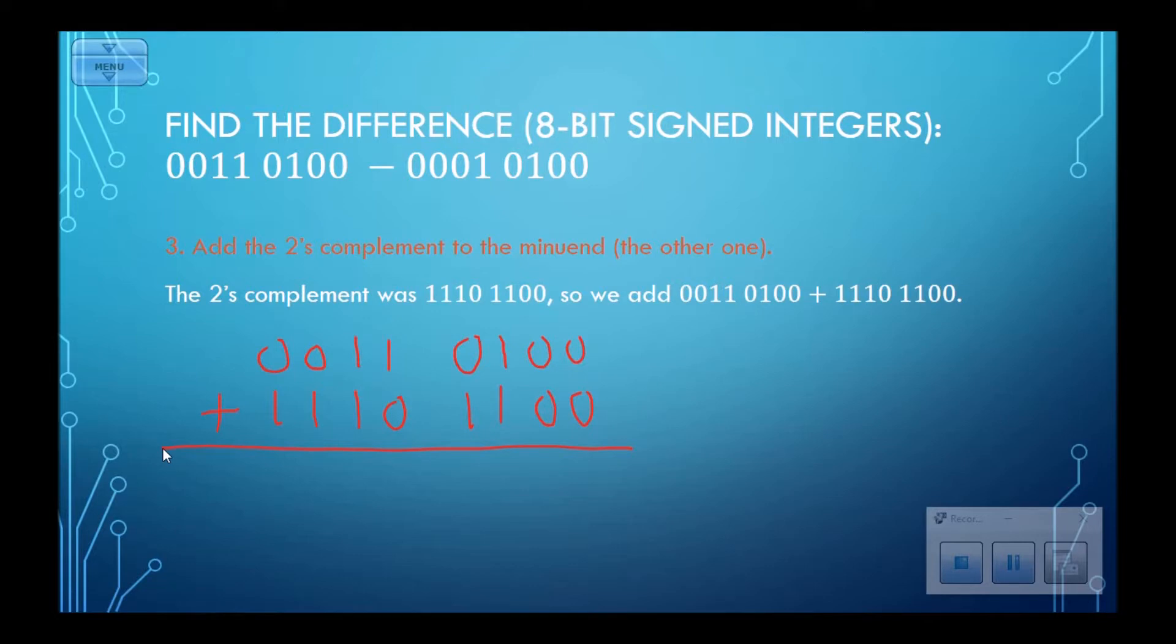Starting on the right, 0 plus 0 is 0. 0 plus 0 is 0. 1 plus 1 is 0 carry a 1. 1 plus 0 plus 1 is 0 carry a 1. 1 plus 1 plus 0 is 0 carry a 1. 1 plus 1 plus 1 is 3, which is 1 carry a 1. 1 plus 0 plus 1 is 0 carry a 1. 1 plus 0 plus 1 is 0 carry a 1. And I've got it. So 1 0010 0000.